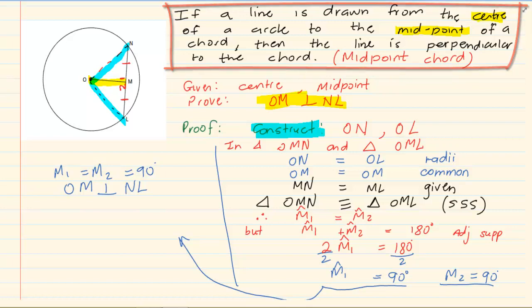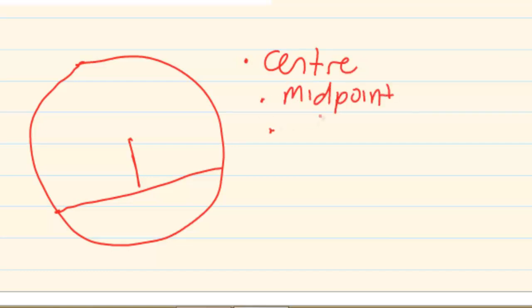Now if you were to summarize these two theorems, they are giving us the following. If I've got the center, if I've got the midpoint, or if I've got that it's perpendicular (perpendicular means 90 degrees), now for this rule to work, you must always have 2 out of 3. If I've got 2, the third one is immediately accepted.